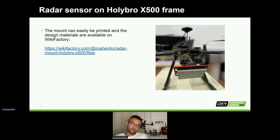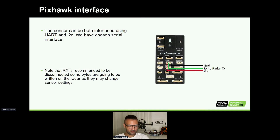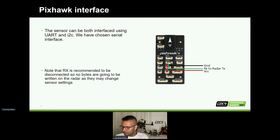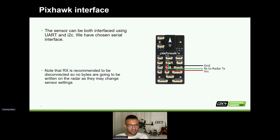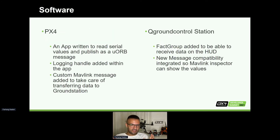I really recommend using screws for this because you are flying — I used double-sided tape here but don't do that. The wiring is actually really easy: you just have three wires coming from your telem port. We implemented this using UART, but you can also use I2C — serial was easier for us so we did it that way. You only need three wires going to your radar because the radar just wants to give output — you better disconnect and have no communication writing to the radar; you just want to read from it.